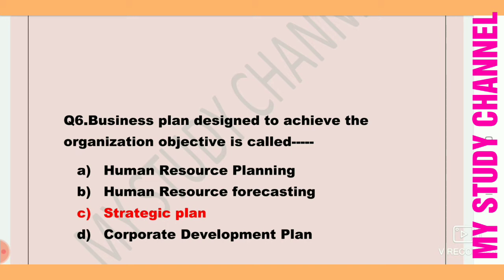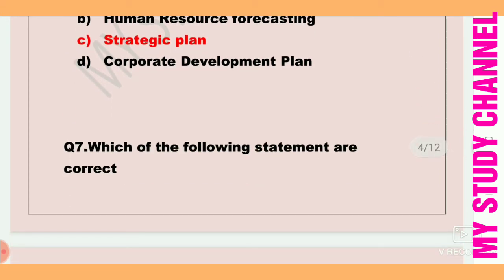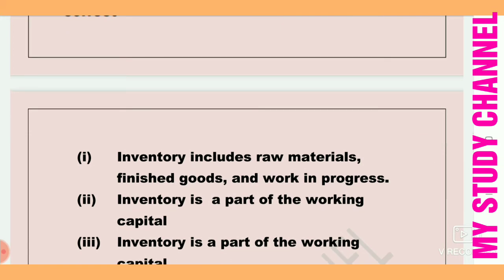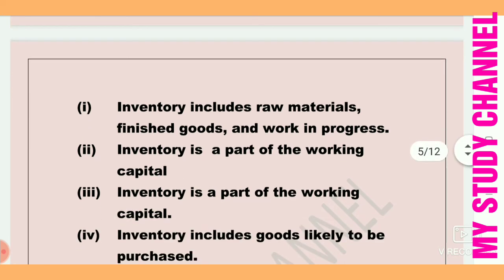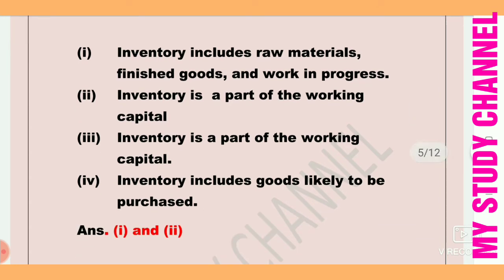Next question: Which of the following statements are correct? First, inventory includes raw materials, finished goods, and work in progress. Second, inventory is a part of the working capital. Fourth, inventory includes goods likely to be purchased. The right answer is option covering statements one and two.